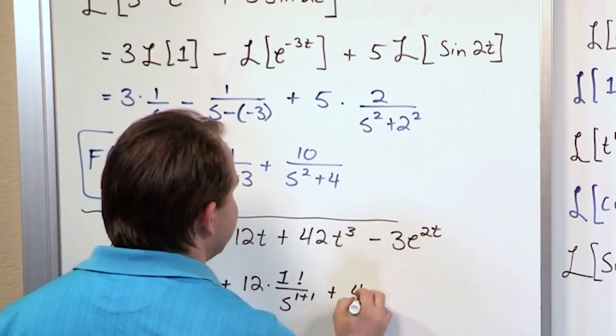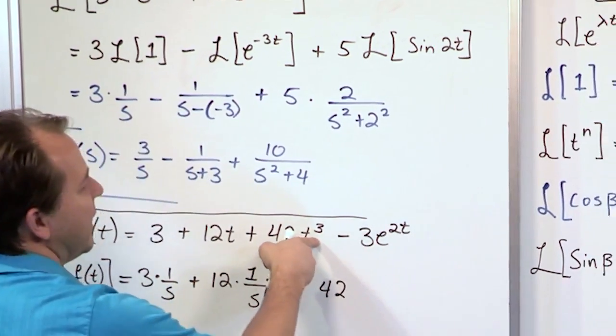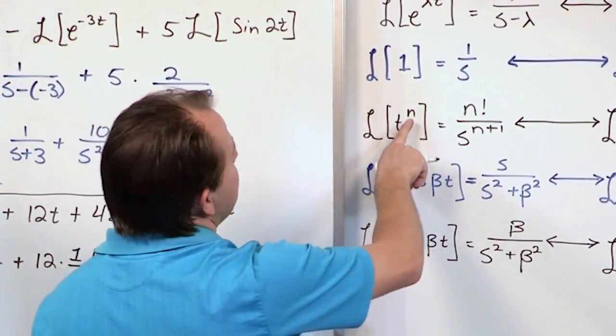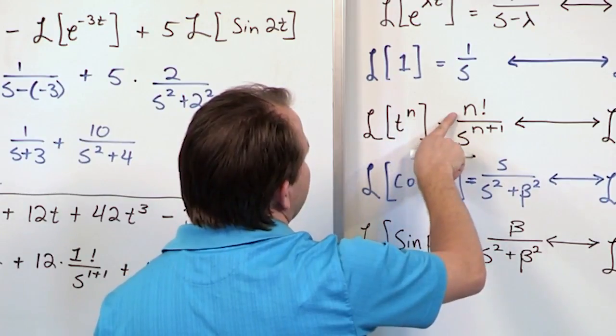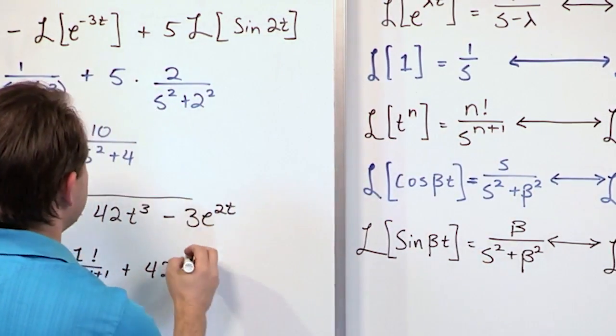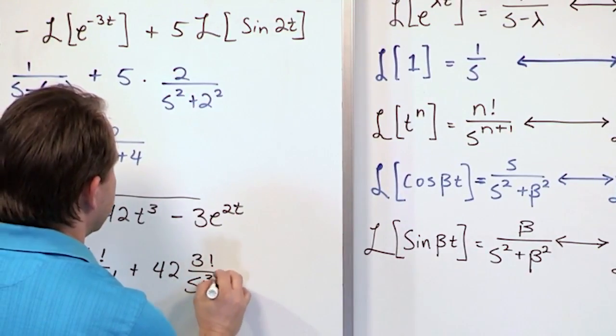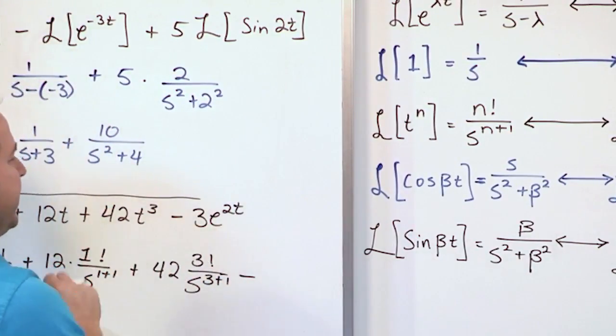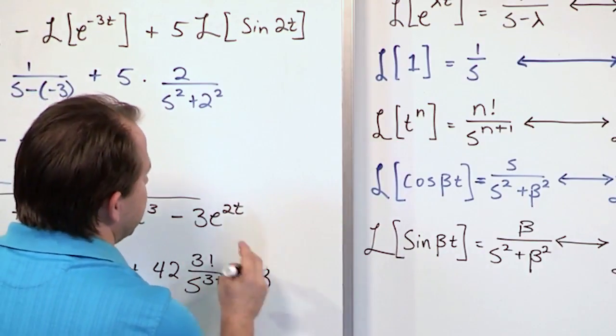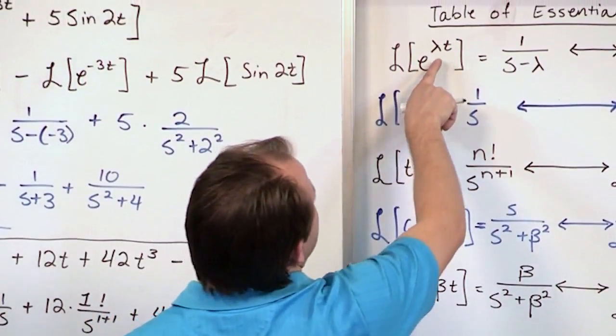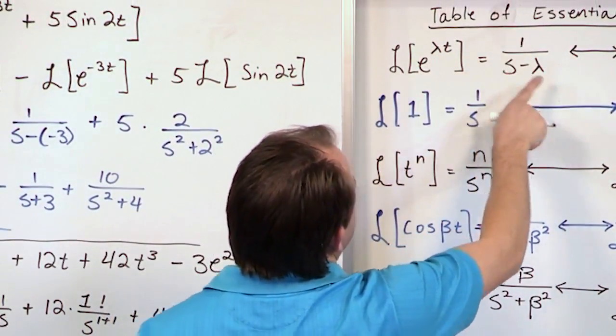Here it's going to be 42 times Laplace transform of t cubed. So again n would be 3, so 3 factorial s to the 3 plus 1. Minus sign from here. Then we have 3 Laplace transform e to the 2t where lambda is 2, so 1 over s minus 2.